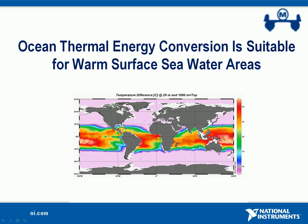OTEC power plants are suitable for the tropics where there is the largest difference in temperature between surface and deep seawater. The map on this slide illustrates the delta T available in the world's oceans at 20 meters and 1,000 meters depth.